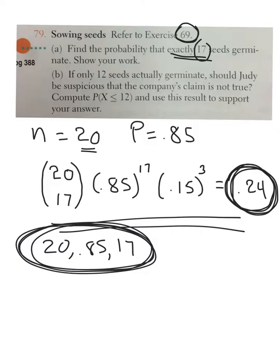Well, only 12 seeds actually germinated. That seems kind of low, considering there's an 85% chance of germinating. Now, are you suspicious? Well, let's figure it out. Probability that this means 12 or less seeds.